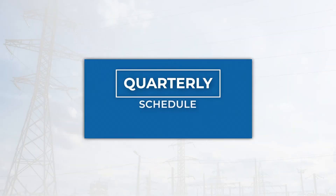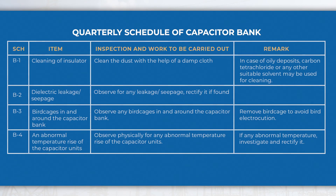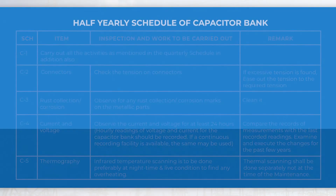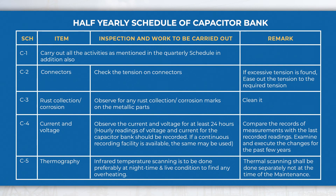In the quarterly schedule of the capacitor bank, perform activities like cleaning, checking for any leakage and bird cages in and around the capacitor bank, etc. In the half-yearly schedule, perform activities like checking tension on connectors, observing the current and voltage for at least 24 hours, thermography, etc., in addition to quarterly schedule activities.